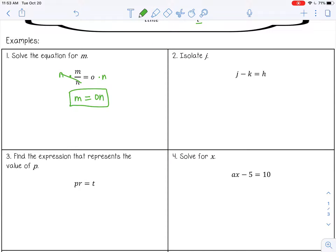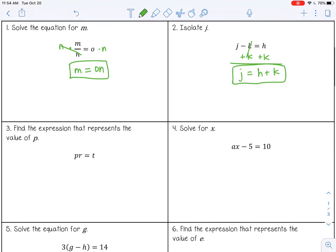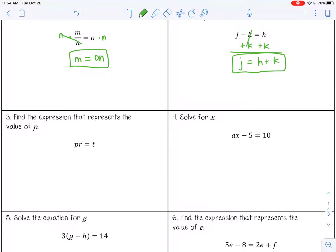Isolate j. Right now it's j minus k. I want to get rid of the minus k by doing the inverse, adding k to both sides. Now you can't combine h and k because they are not like terms, they're not the same variable. So I can just write it as an expression, h plus k. So j equals h plus k. Your answers here are going to look a little bit different, they're going to be expressions instead of just numbers, but that's okay, that's what we want.